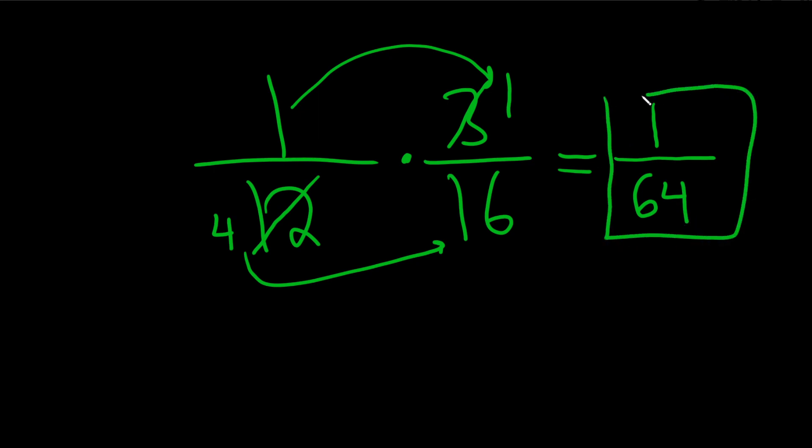And that would be the final answer. If you're wondering how I knew that 4 times 16 was 64, I thought of it like this. 2 times 16 is 32, and then times 2 again is 64.